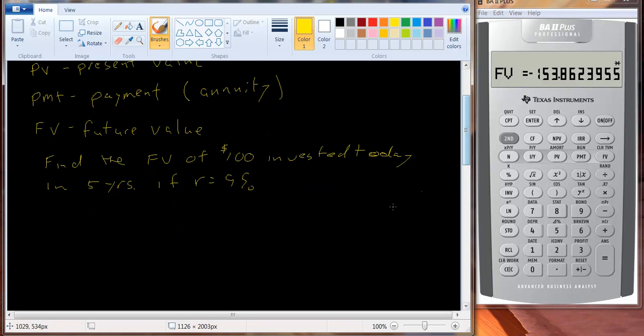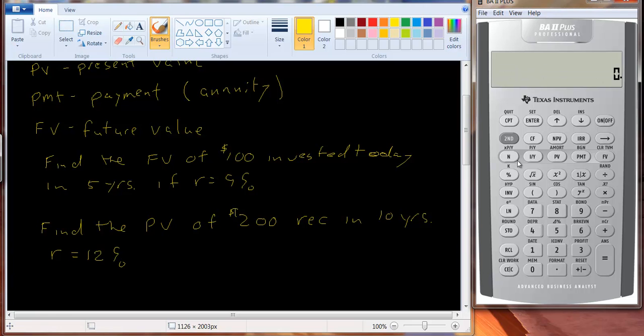So let's do another question. Let's find the present value of $200 received in 10 years, and let's use an interest rate equal to 12%. So how do we clear it? You can't just keep hitting this because the numbers are still stored here. In fact, if I hit compute FV, I still get the answer. So the numbers are still in there.